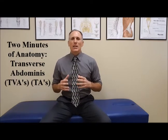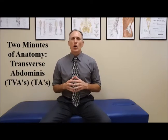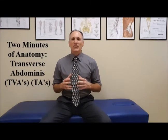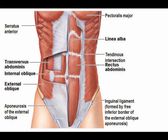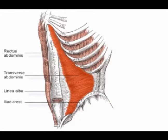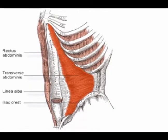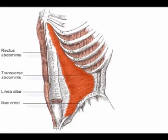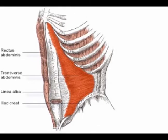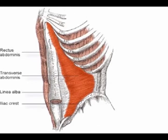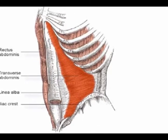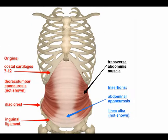The transverse abdominus muscles are also known as the TAs or the TVAs. They are the deepest of the abdominal muscles. They wrap around the entire abdominal region, run along the transverse plane, and act as a support belt for the abdominal region.